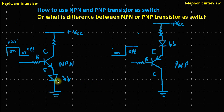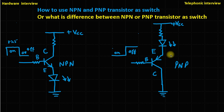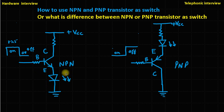One difference is that we always connect the load in the NPN transistor at the emitter side. Similarly, in the PNP transistor we also generally connect the load at the emitter point. So you can say the load will be connected at the emitter terminal of both transistors.